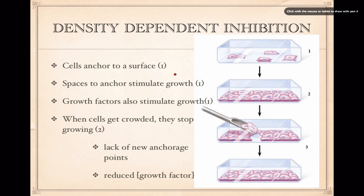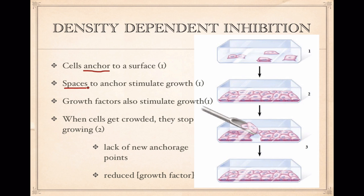What's happening here is that these cells have to anchor themselves. The first thing they need to do is find a surface to attach to. Human cells don't like to grow floating suspended in a solution — they like to be touching something. For this reason, they have something called anchorage dependence. So as long as there's plenty of places for them to stick and plenty of space, they'll grow. The other thing they need is space, so anchorage points and space stimulate them to grow.